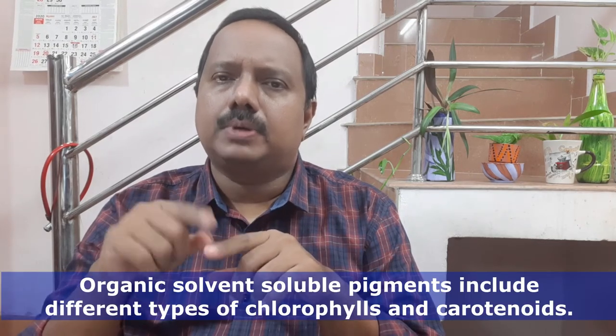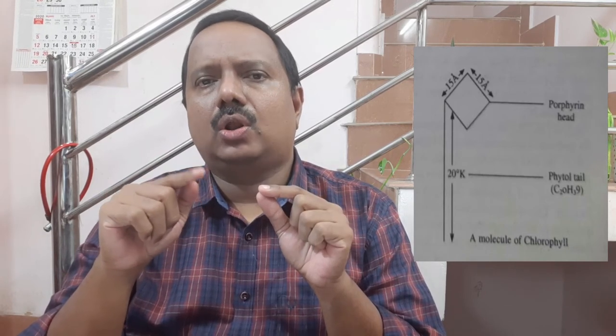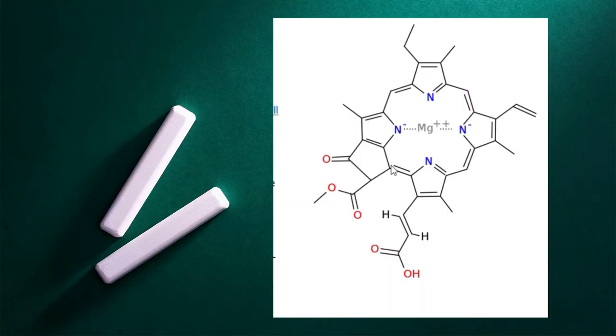The organic solvent-soluble pigments are different types of chlorophyll. All chlorophylls have a common basic structure, and there are eight different types of chlorophyll molecules based on the side chains on the basic skeleton. Chlorophyll A has the molecular formula C55H72O5N4Mg. The structure is like a spatula where the head is formed of a tetrapyrrole ring in which a magnesium atom is present, plus a long phytol tail. Non-ionic magnesium is at the center — two pyrrole rings are linked to magnesium with two covalent bonds and the other two with coordinate bonds.